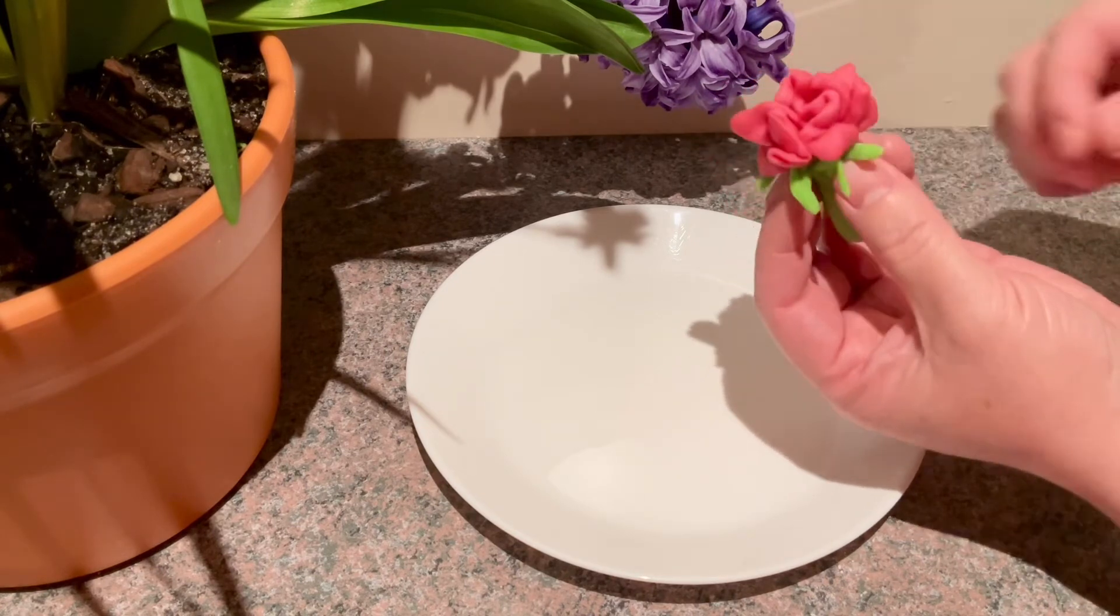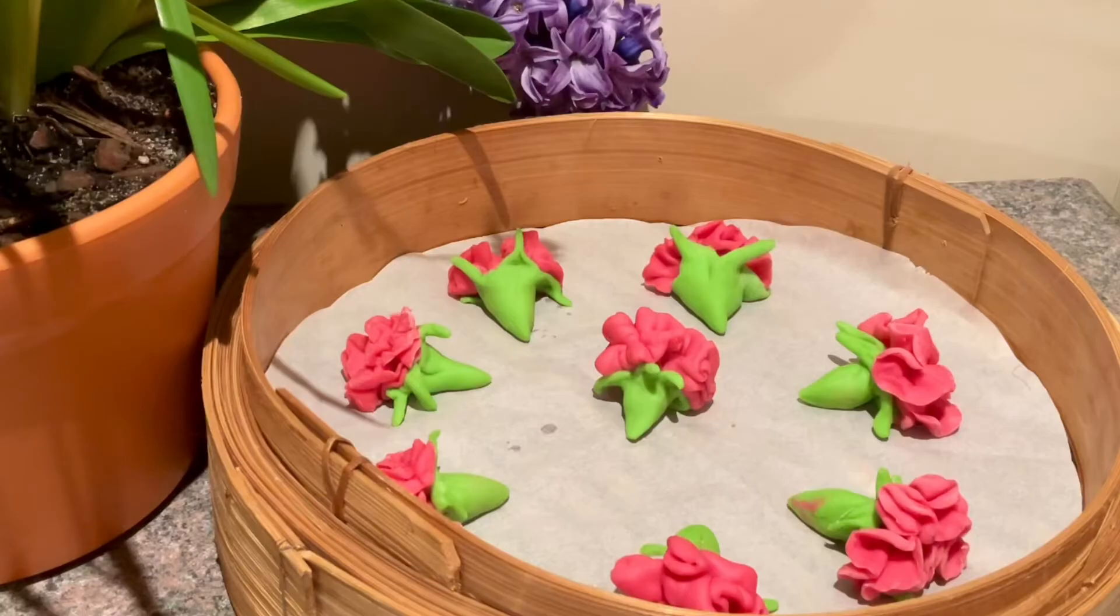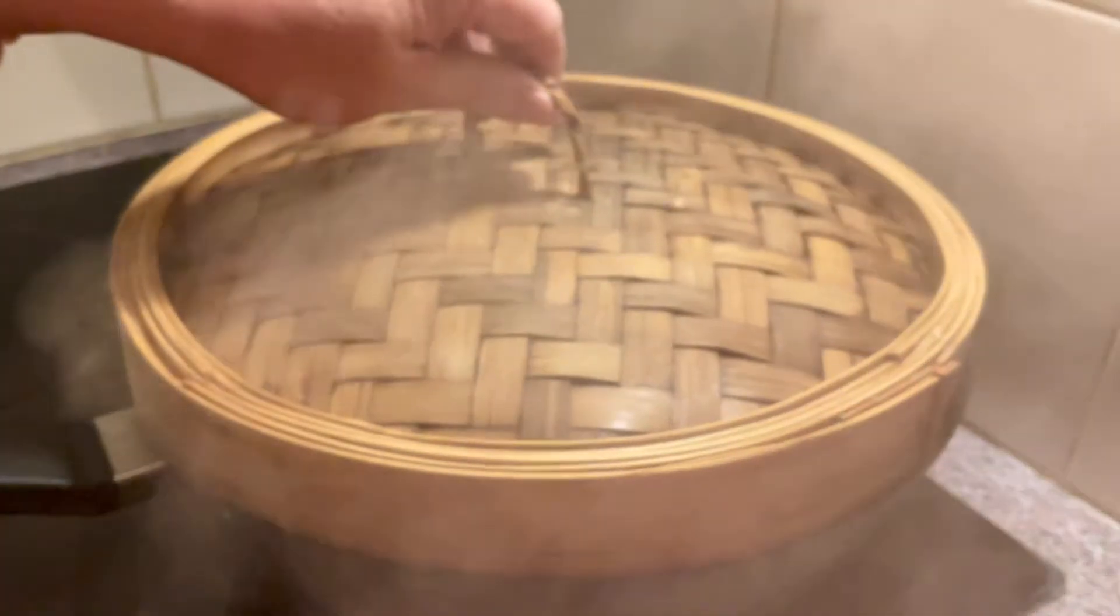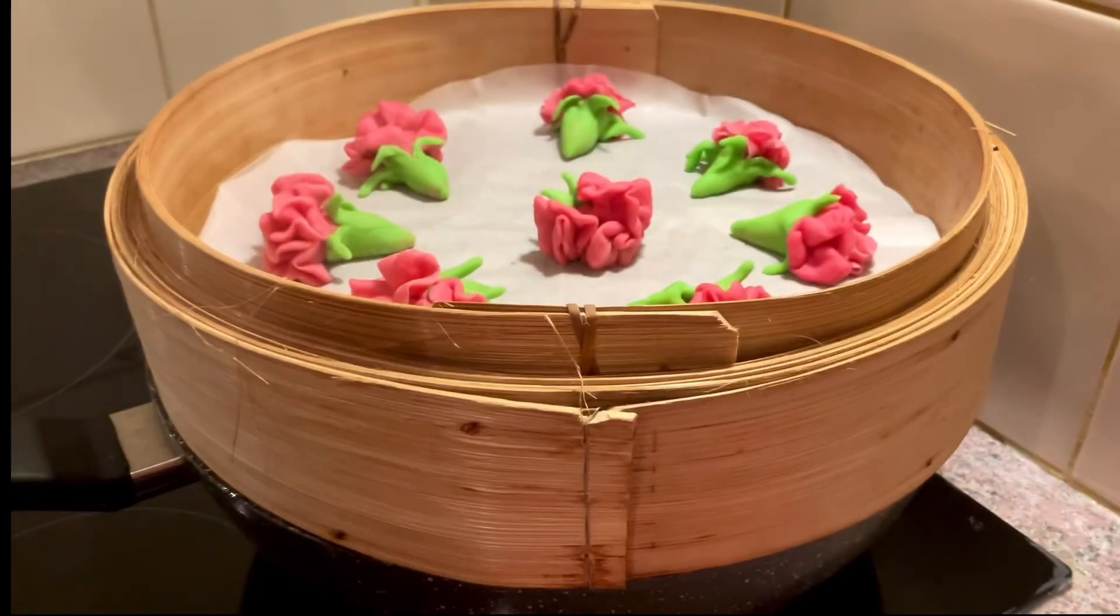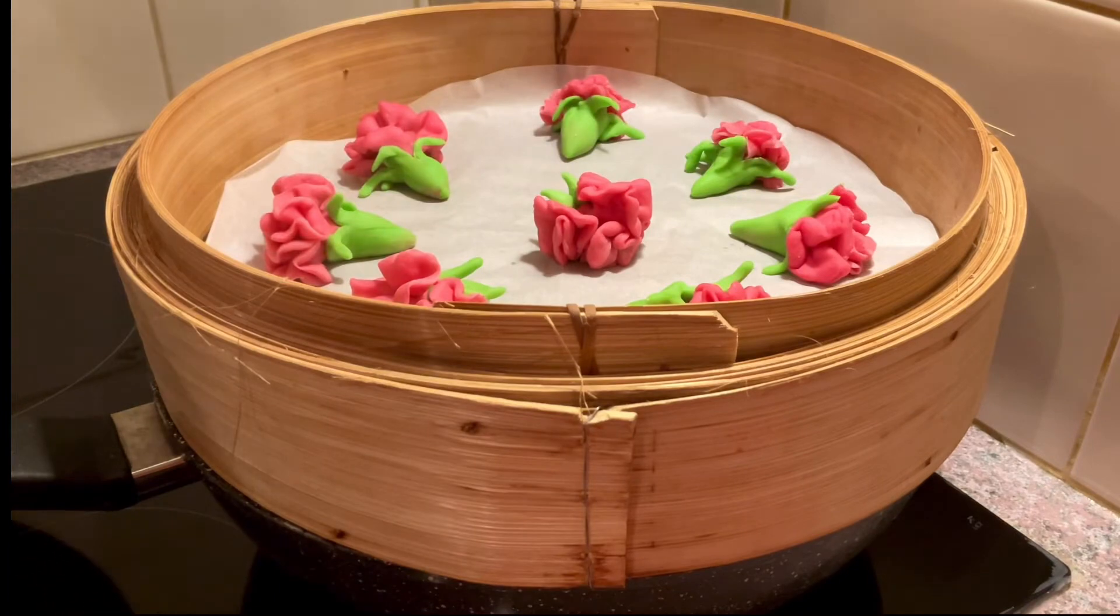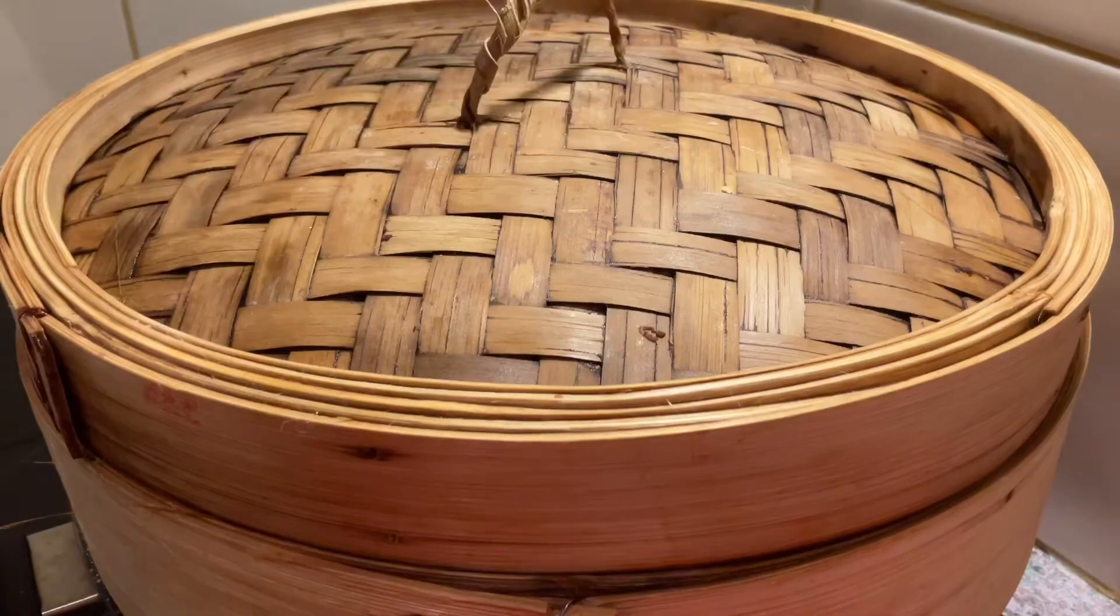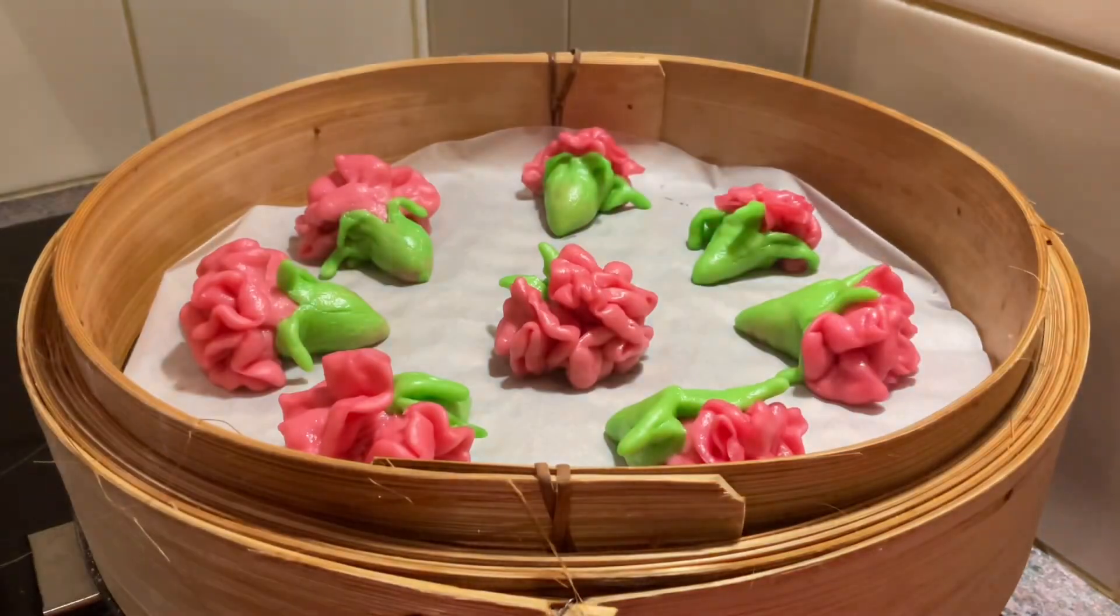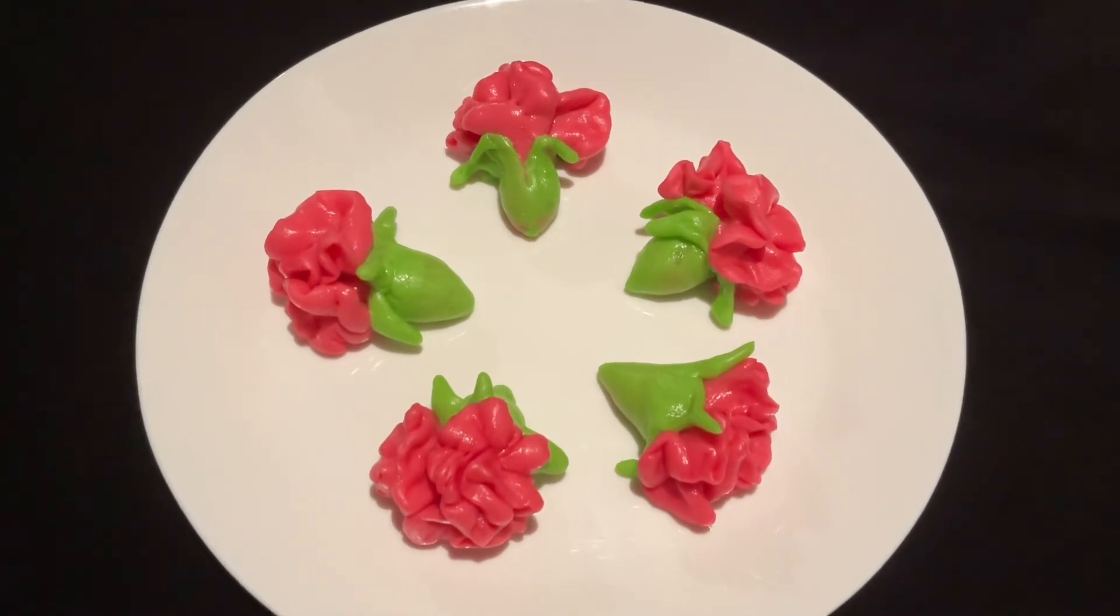一朵漂亮的康乃馨完成了。沸水上锅蒸五分钟。关火后闷了两分钟,浪漫温馨的康乃馨做好了。A beautiful carnation is complete. Steam in boiling water for 5 minutes. After turning off heat, let sit for 2 minutes. The romantic carnation is done.